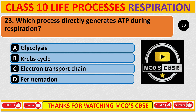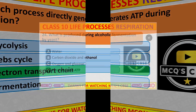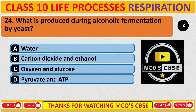Question 23: Which process directly generates ATP during respiration? Correct answer is C: Electron transport chain. Question 24: What is produced during alcoholic fermentation by yeast? Correct answer is B: Carbon dioxide and ethanol.